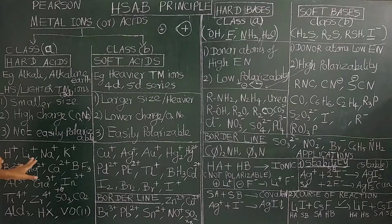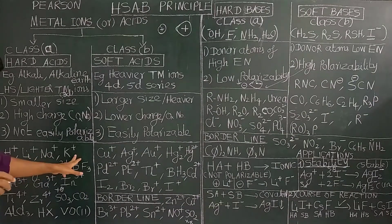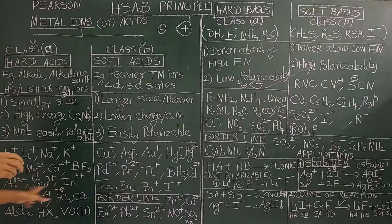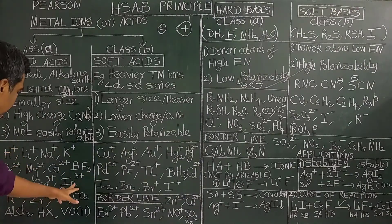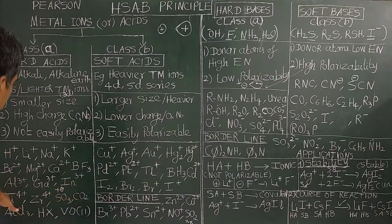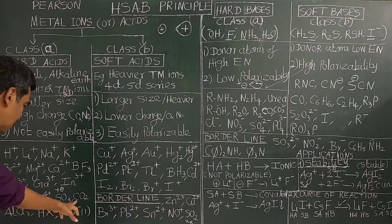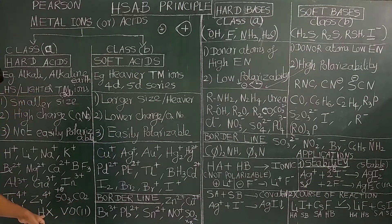Examples of hard acids include H+, Li+, and lighter alkali metal ions, La3+, Fe3+, Al3+, Ga3+, In3+, La4+, Zr4+, and other highly charged lighter metal ions.